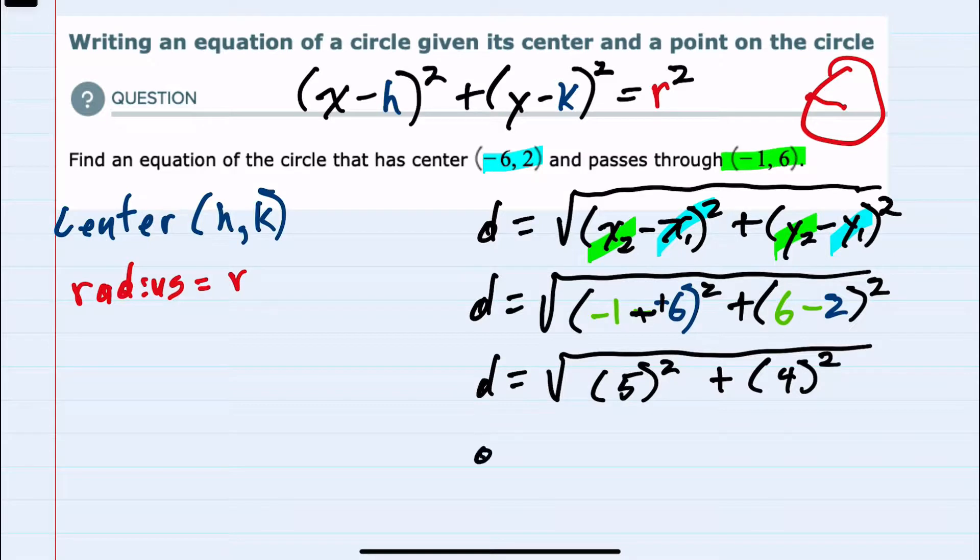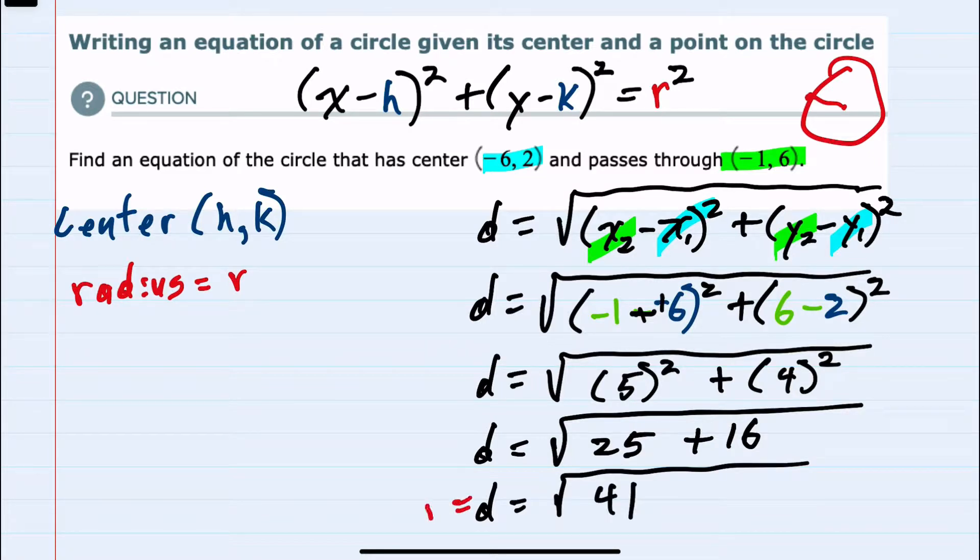And now squaring each of these we have the distance is the square root of 25 plus 16. So distance is the square root of 41, and this distance is the radius.